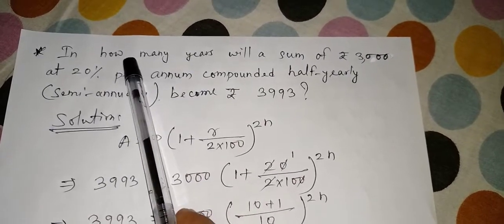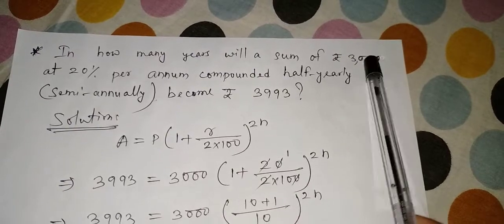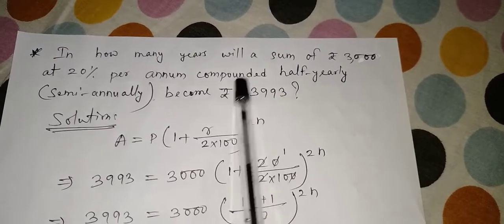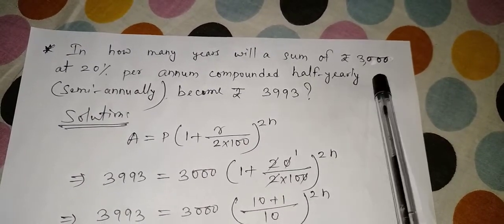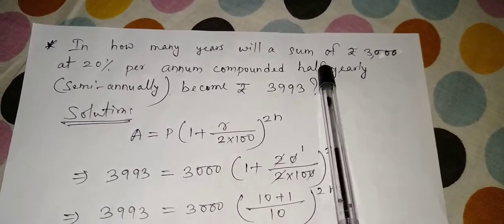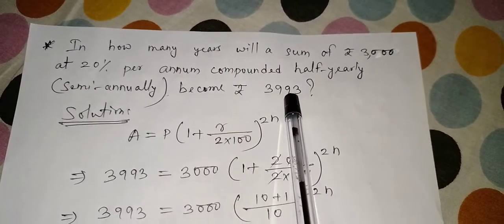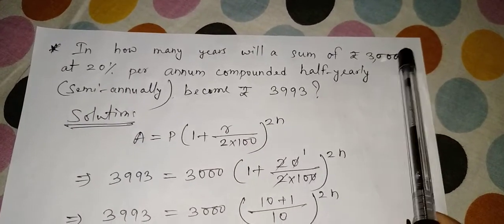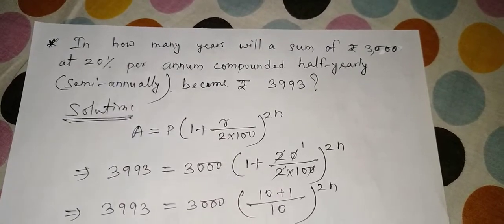One more question I will discuss: In how many years, that means you have to find time, time means n, will a sum of ₹3000, this 3000 means this is principal, at 20%, that means it is rate per annum, compounded half-yearly. So one new word you can see here: not annually, not per annum, but it is half-yearly or semi-annually. Both the meaning is same: become ₹3993.